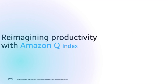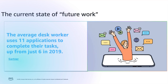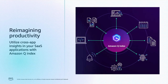Let us talk about how Amazon Q-Index can be used to increase productivity. According to Gartner's survey of 4,800 employees, the average task worker uses 11 applications to complete their tasks, up from 6 in 2019. Despite the expanded toolset they have, half of employees say they struggle to find the information they need to complete work. Q-Index provides comprehensive cross-app insights across your various SaaS applications.